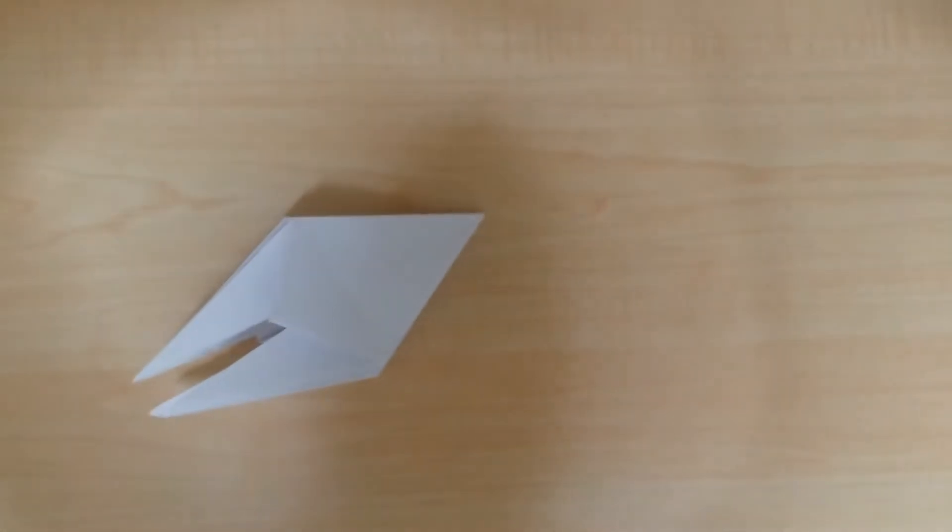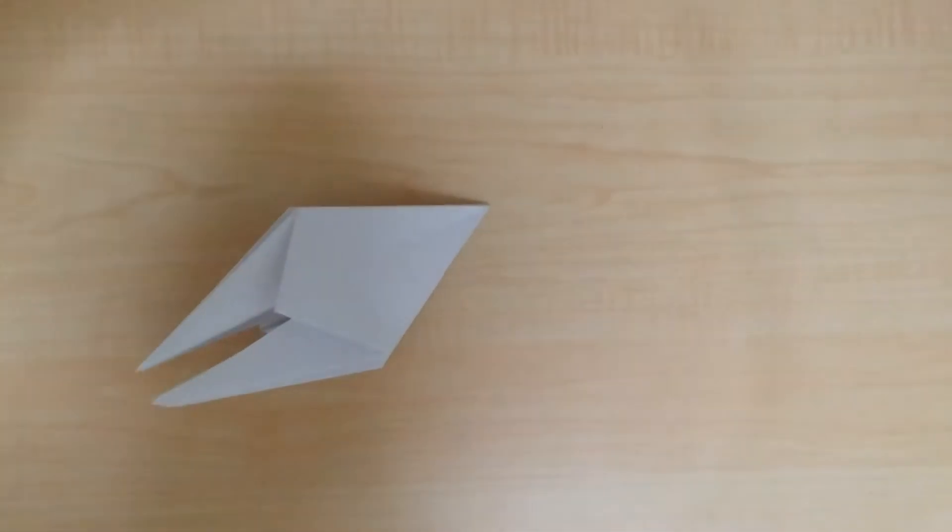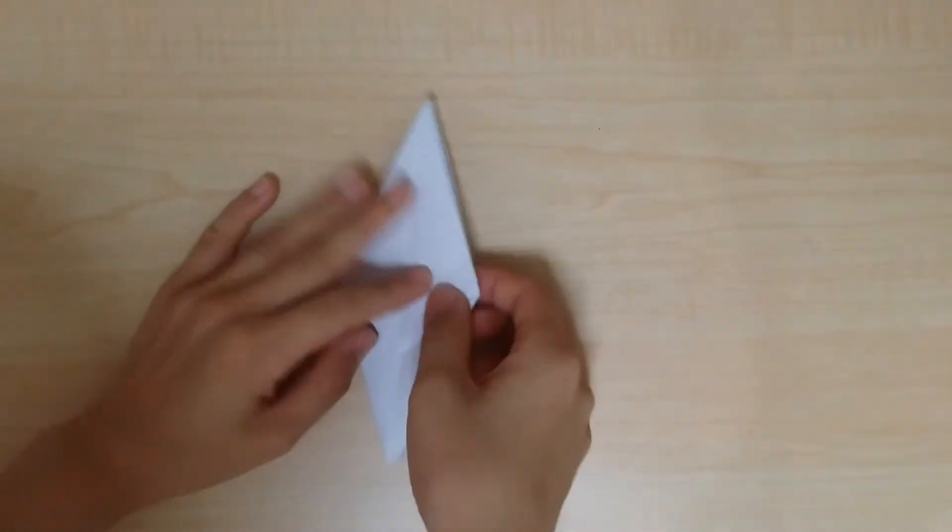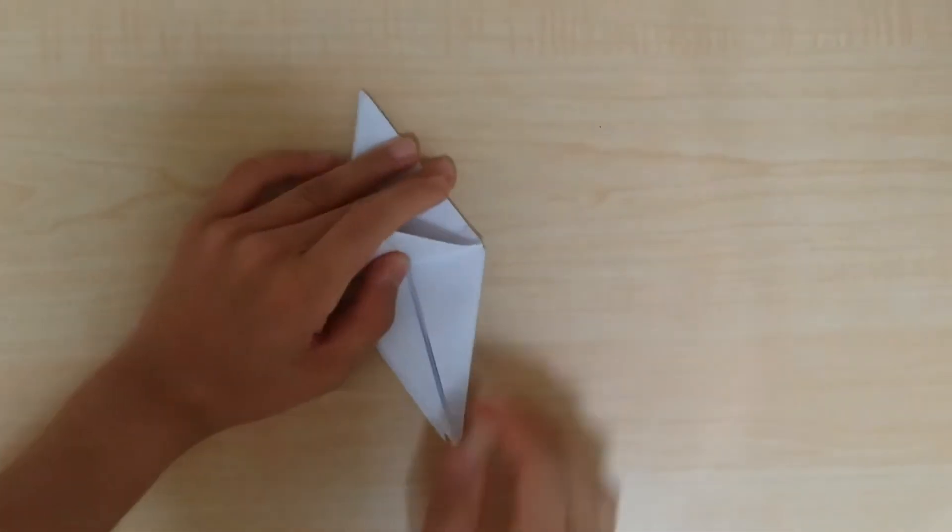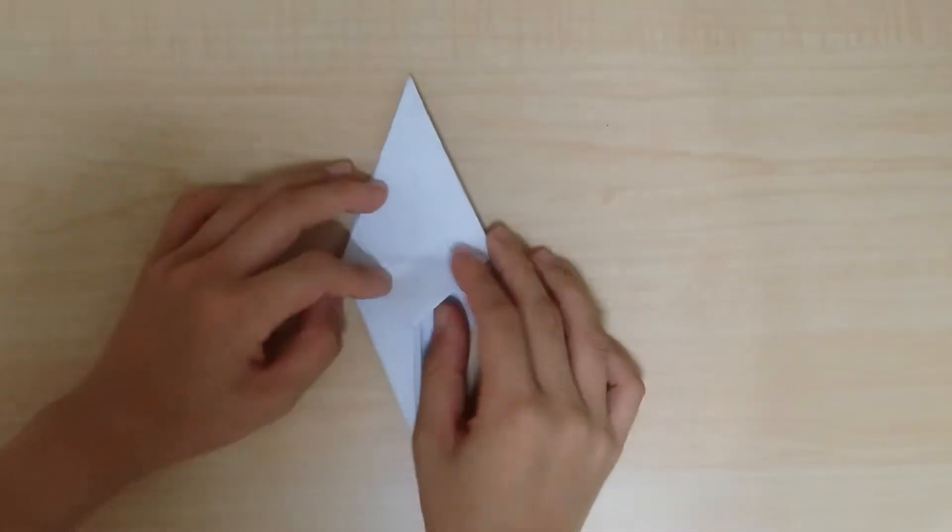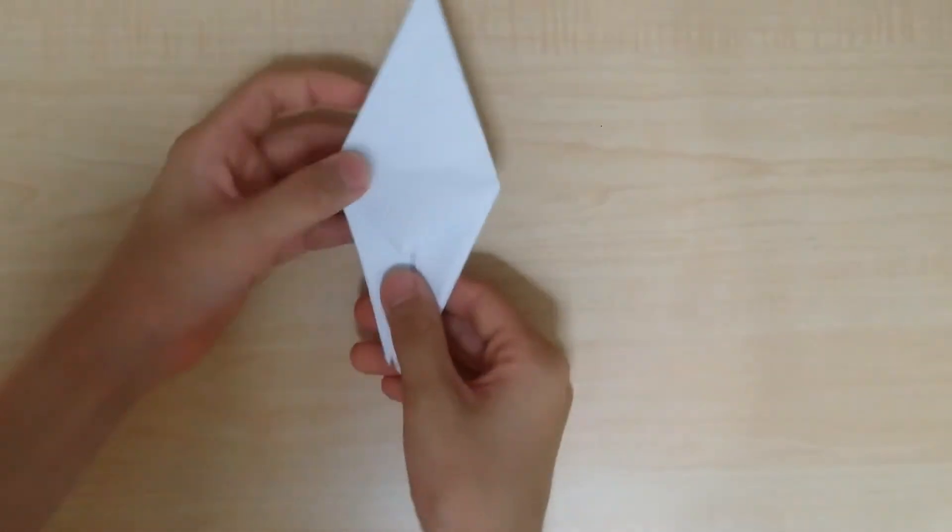Today we will be folding an origami Tantive for the very first shape that we see in Star Wars, the one that Princess Leia escapes in from Darth Vader but fails. So what we want to do is take a frog base.